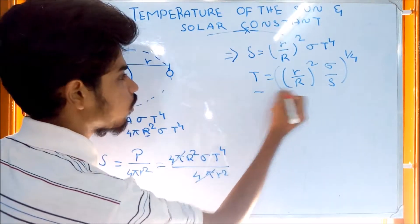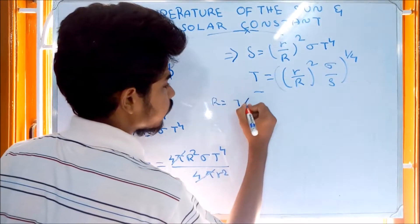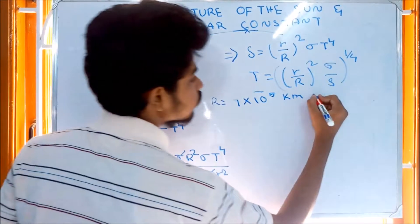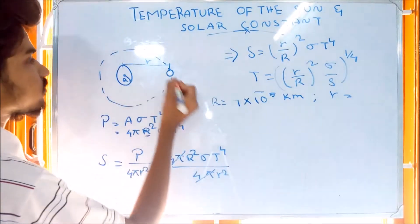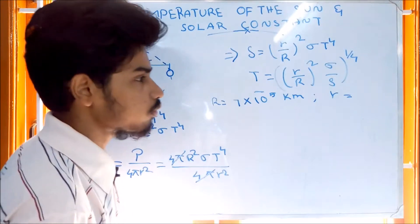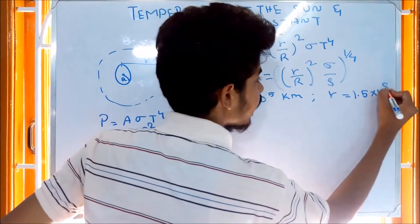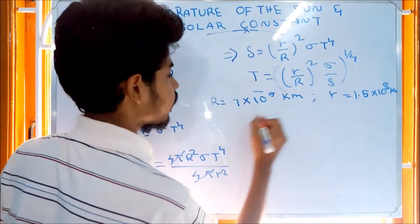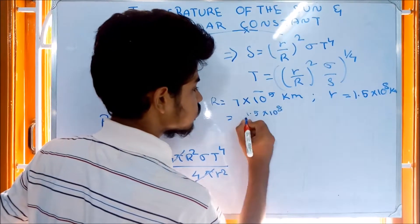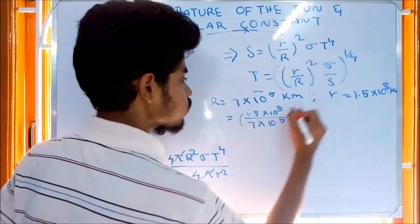If you want to see the values: r is the radius of the sun, r equals 7 into 10 to the power of 5 km. Capital R is the distance from earth to sun, R equals 1.5 into 10 to the power of 8 km. Substituting: 1.5 into 10 to the power of 8 divided by 7 into 10 to the power of 5, whole squared.